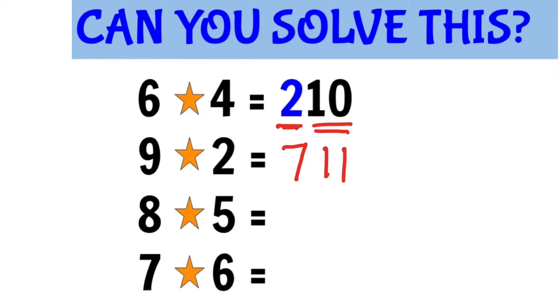Doing the same thing for 8 star 5, the difference is 3, and the sum is 13. So 8 star 5 is 313.